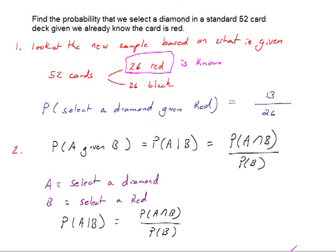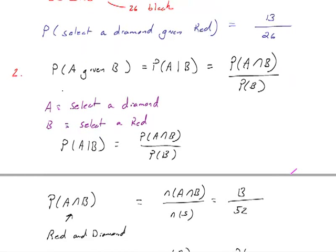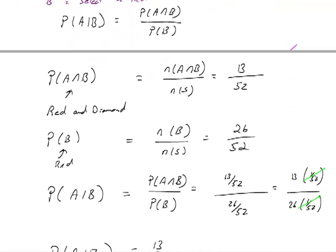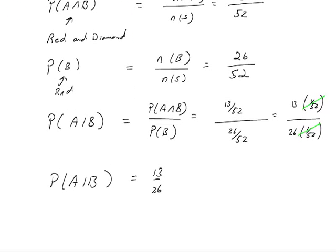The same way as if we had just looked at the problem and said, you know, we're only dealing with 26 red cards. 13 of those are diamonds. So our probability of selecting a diamond given that the card is red is 13 by 26. We also get this by using the general definition of conditional probability. So that's why the probabilities agree.